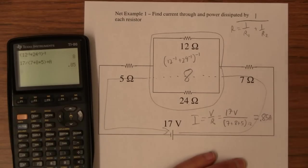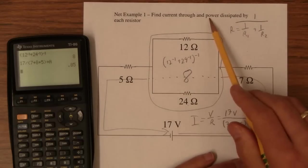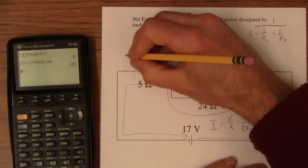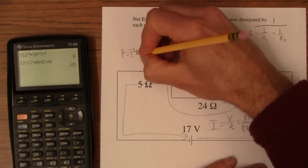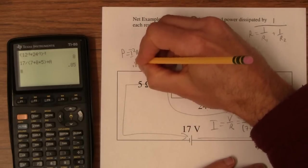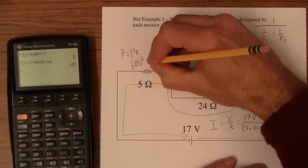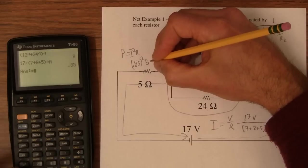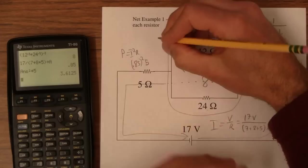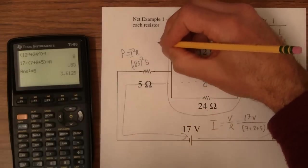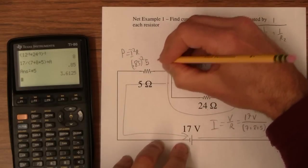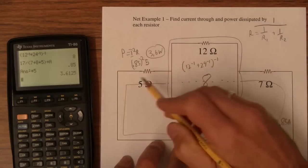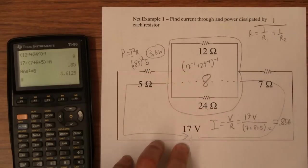So I know it says find the power dissipated by each resistor. The power dissipated by this one would be, I'm going to use power as I squared R. So I can go 0.85 squared times 5. So squared times 5, 3.6125 watts and there it is. So that's about 3.6 watts. And I'm not going to do all of those. If I find the current, you'll be able to do this.